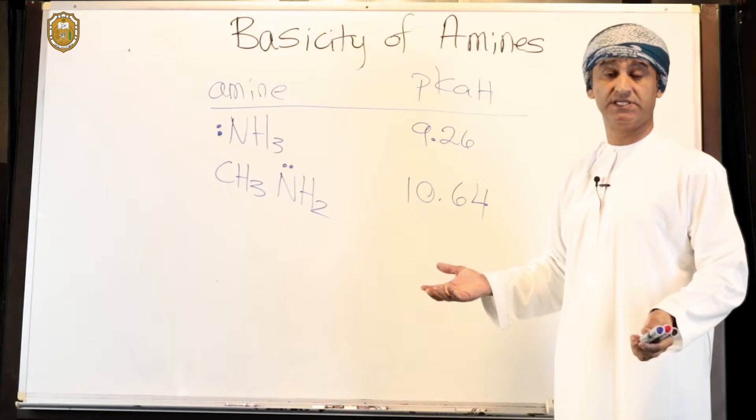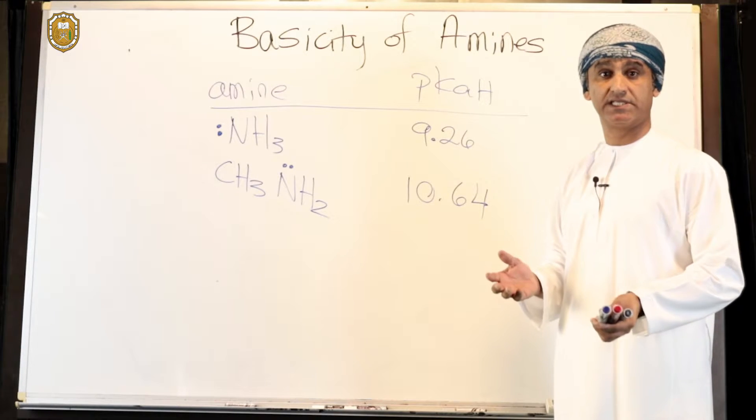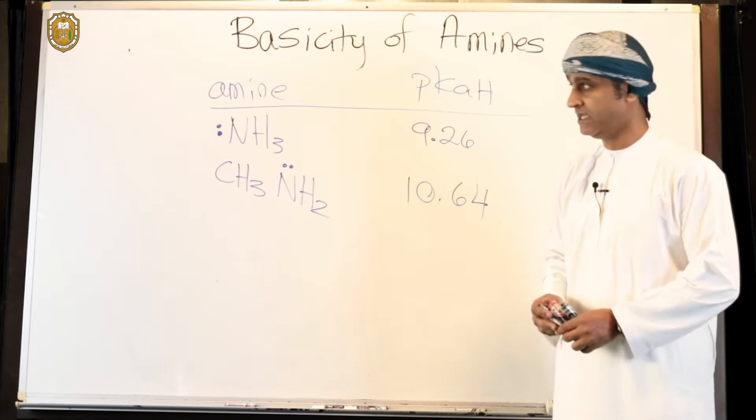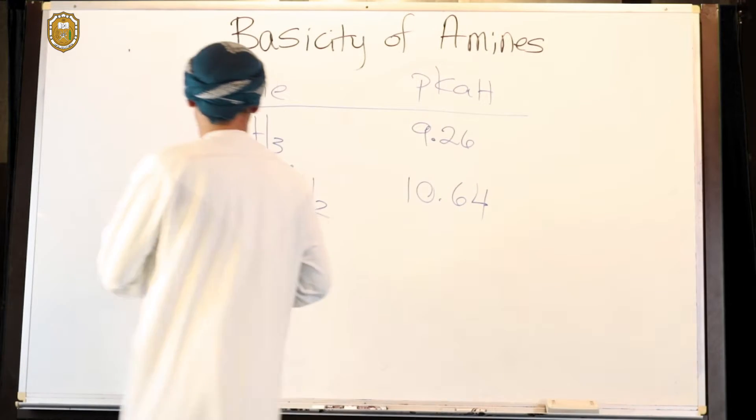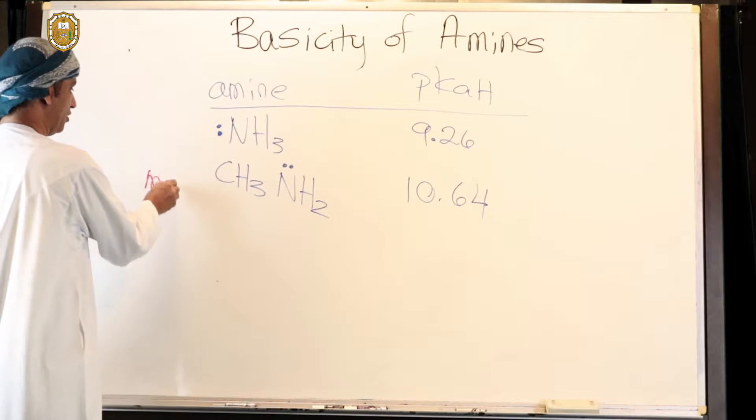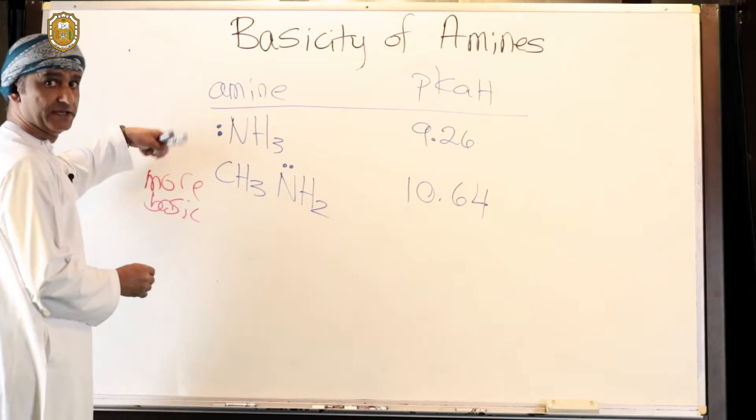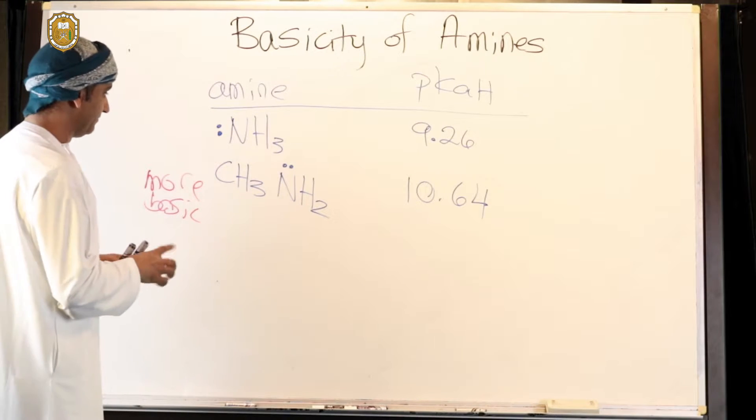The higher the pKa, the weaker the conjugate acid is, or the weaker the ammonium ion is. Therefore, the stronger the amine would be. This methyl amine is more basic, meaning more basic than ammonia itself.